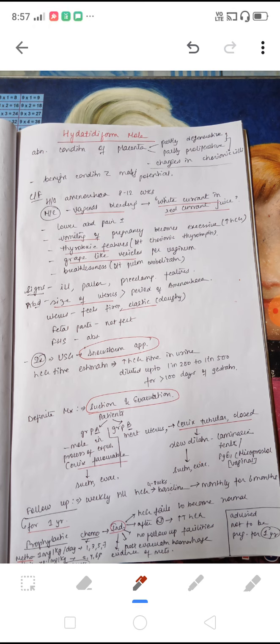One important thing is the contraceptive advice which is given is barrier methods. Injection DMPA and IUCDs can also be given.